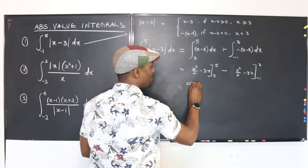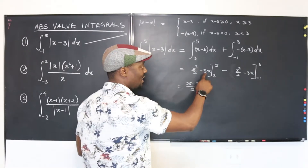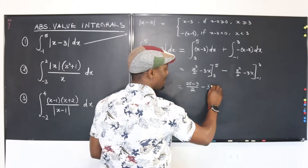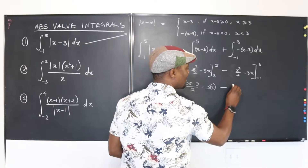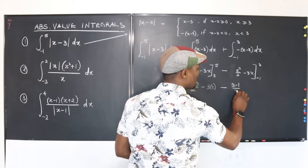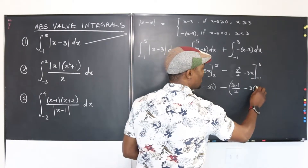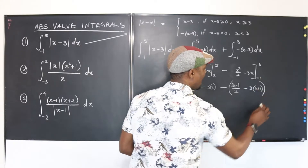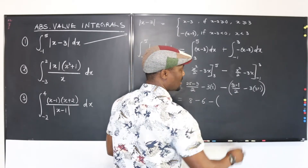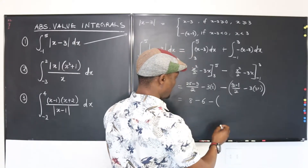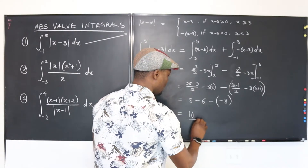Plugging in 5: you get 25 minus 9 over 2 for the squared terms — that's 16 over 2, which is 8 — minus 3 times 5 minus 3 times 3, giving 8 minus 6 equals 2. For the second piece, plugging in the limits gives 9 minus 1 over 2, and 3 times 3 minus negative 1 equals 3 times 4, which contributes negative 8. So you have 2 plus 8, which gives us 10. The answer is 10.